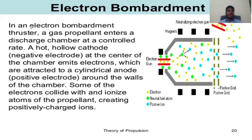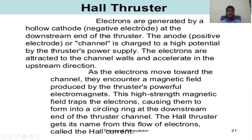Electron bombardment: in an electron bombardment thruster, a gas propellant enters a discharge chamber at a controlled rate. A hot hollow cathode (negative electrode) at the center of the chamber emits electrons which are attracted to a cylindrical anode (positive electrode) around the walls. Some electrons collide with the propellant atoms creating positively charged ions. Hall thrusters: electrons are generated by a hollow cathode at the downstream end. The anode (positive electrode) or channel is charged to high potential. As electrons move toward the channel they encounter a magnetic field produced by powerful electromagnets, causing them to form a circling Hall current at the downstream end.